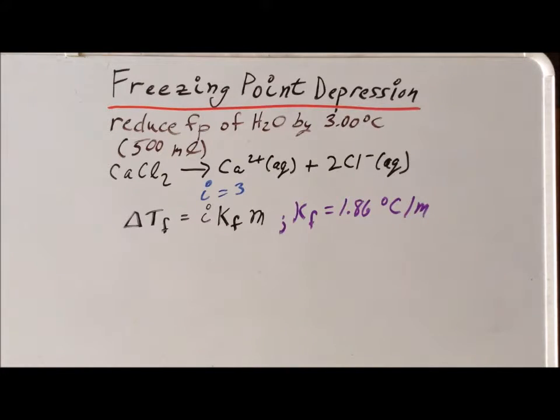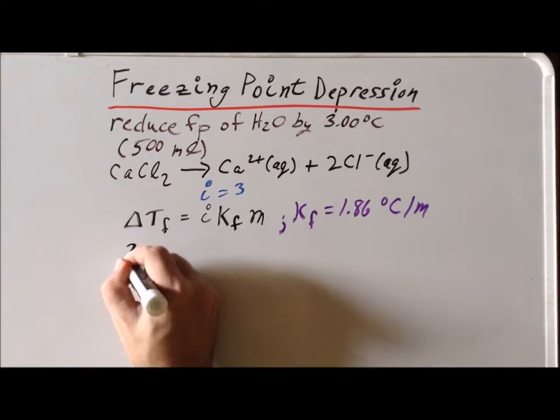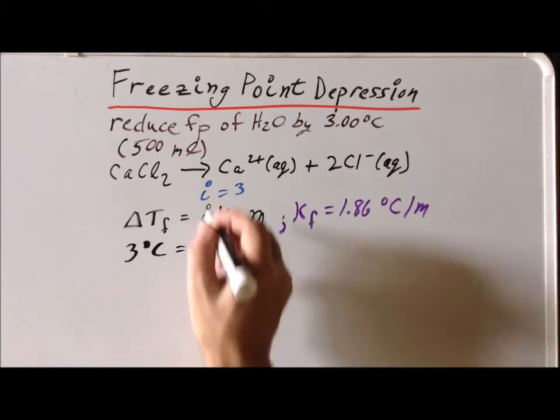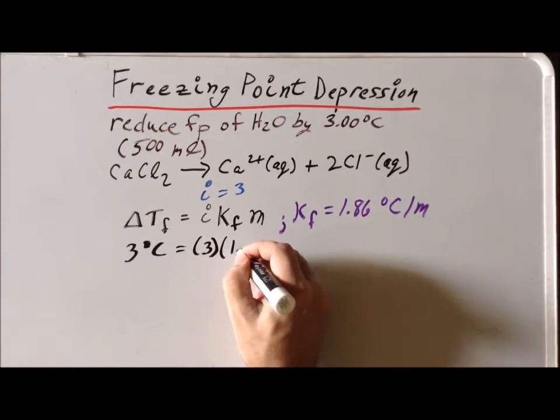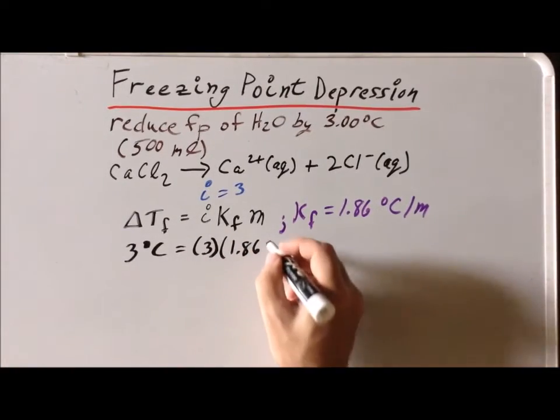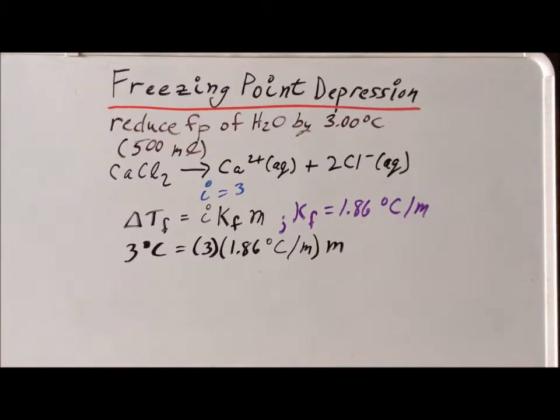So now, since we know the value of k sub f, we know the Van't Hoff factor i being equal to three in this particular case, and we even know what the change in the freezing point is that we want to effect, we can solve for the molality of the solution that we need to create. Let's insert the values here. We have three degrees centigrade, i is simply going to be three, k sub f is 1.86 degrees centigrade divided by molality, and then m is our unknown. That is what we want to solve for.